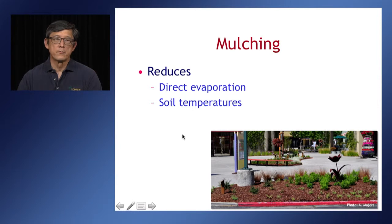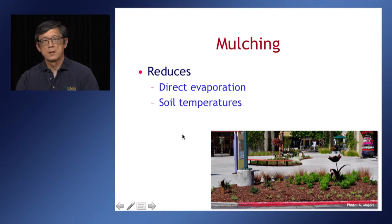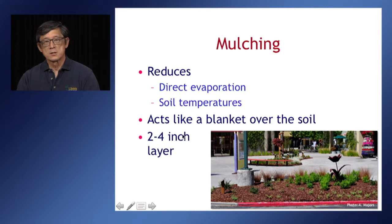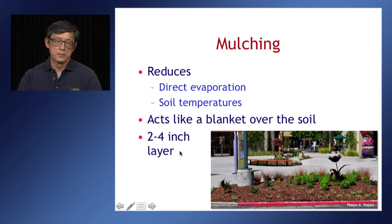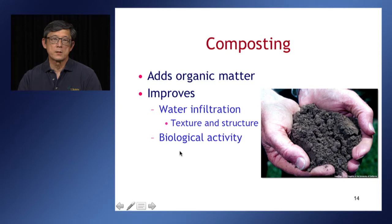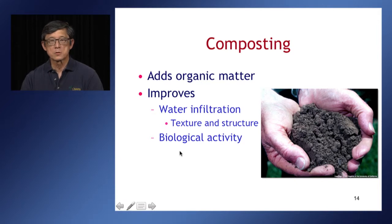We'd also encourage the use of mulches in landscapes. Mulches reduce direct evaporation from the soil and moderate soil temperatures. They essentially act like a blanket — an insulator over the soil — to reduce water loss and reduce soil temperatures. Ideally, we'd like a layer that is two to four inches thick. As organic mulch breaks down, it's contributed to the soil. Using compost is a direct way to add organic matter to the soil, which improves water filtration by improving the texture and structure of the soil, and supports biological activity from organisms that live in the soil.